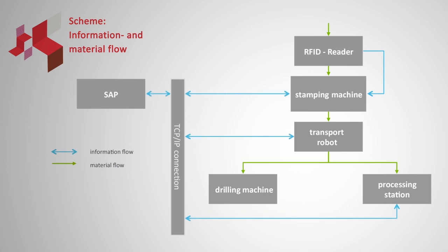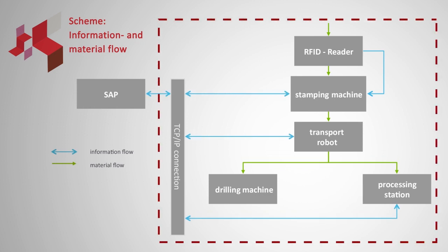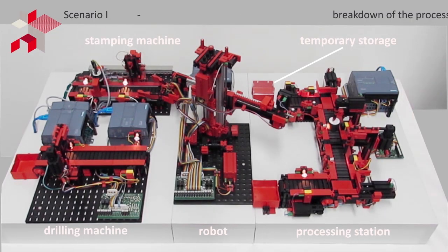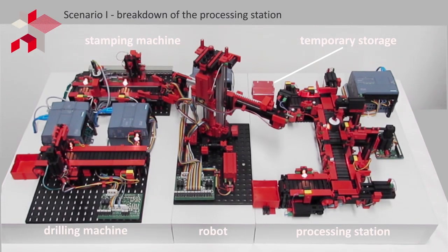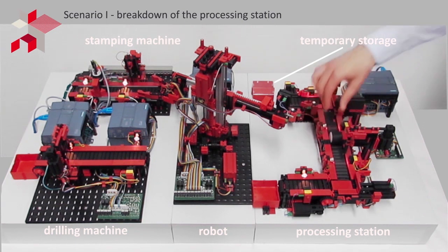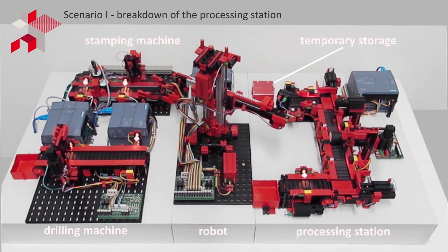Thanks to the interconnectivity of autonomous production elements, parts manufacturing has been fully optimized. Let's have a look at the BearingPoint Industry 4.0 smart factory model. We have chosen three application examples as illustration. Scenario 1 illustrates the breakdown of a processing station where unaffected processes continue to function. A production part blocks the processing station on the right, which pushes a signal towards the transport robot.